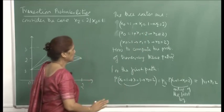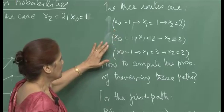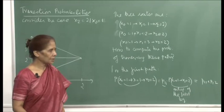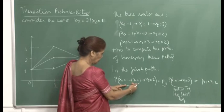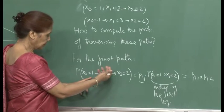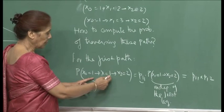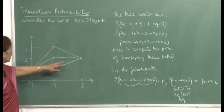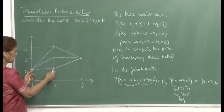No other route is possible of going from 1 to 2 in two steps. Now we need to compute the probabilities of traversing these paths, because we want to compute two-step transition probabilities. For the first path, the probability of transitioning from 1 to 1 when initially in state 1 and transitioning to state 1 in the next time period is p₁₁. These are the one-step transition probabilities we already know.